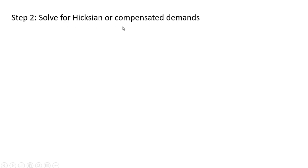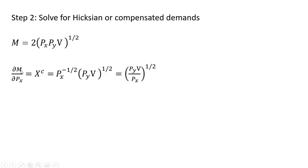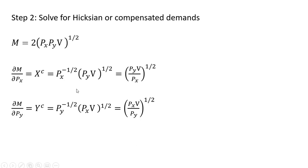Step 2: we're going to solve for the Hicksian or compensated demands for good x and good y. Here's our expenditure function that we just derived. We're going to take the partial derivative of that equation with respect to the price of good x, and we get this result. To get the compensated demand for good y, we take the partial derivative of the expenditure function with respect to the price of good y, and we get this result.